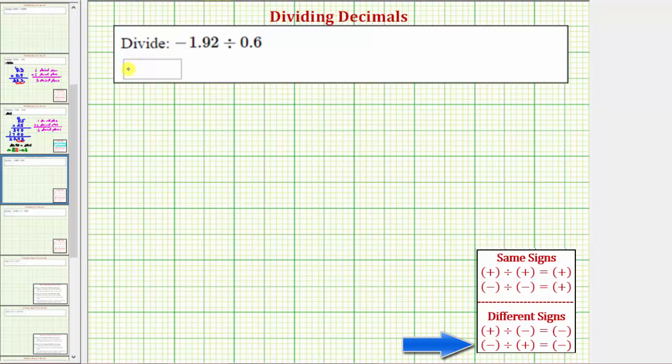Let's record the negative sign here, and now let's determine the quotient of positive 1.92 and positive 0.6. Let's write this quotient in long division form. So we have 1.92 divided by 0.6.